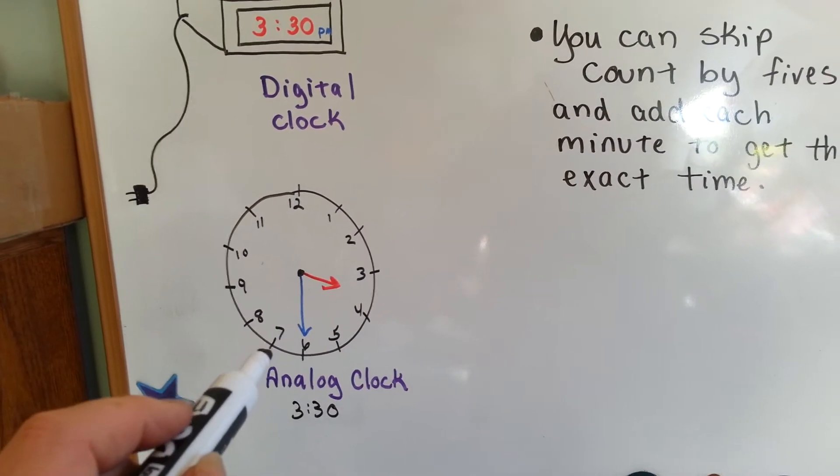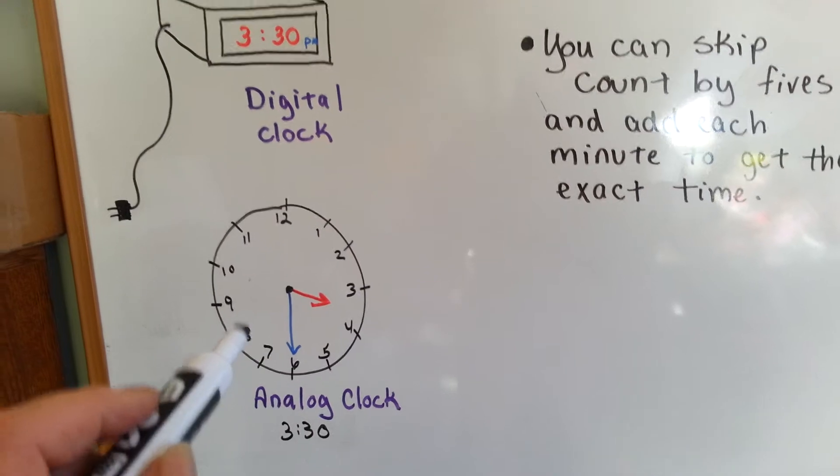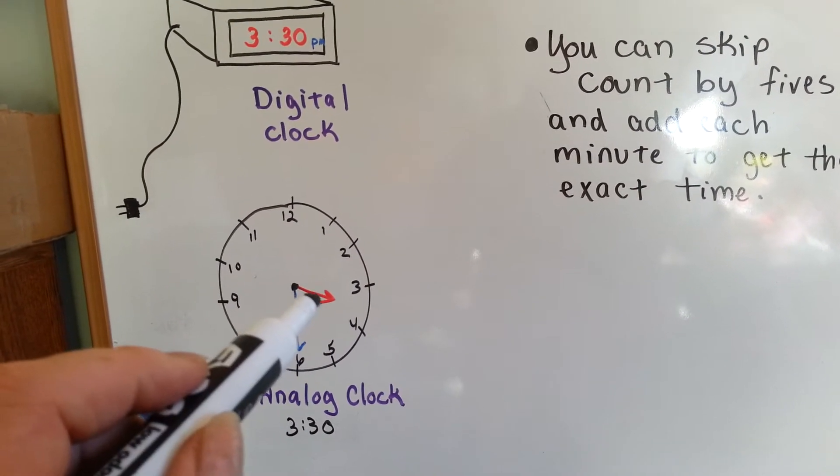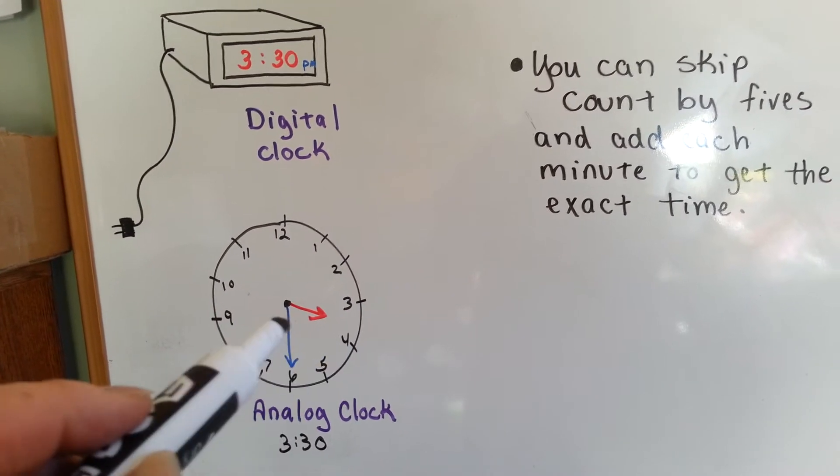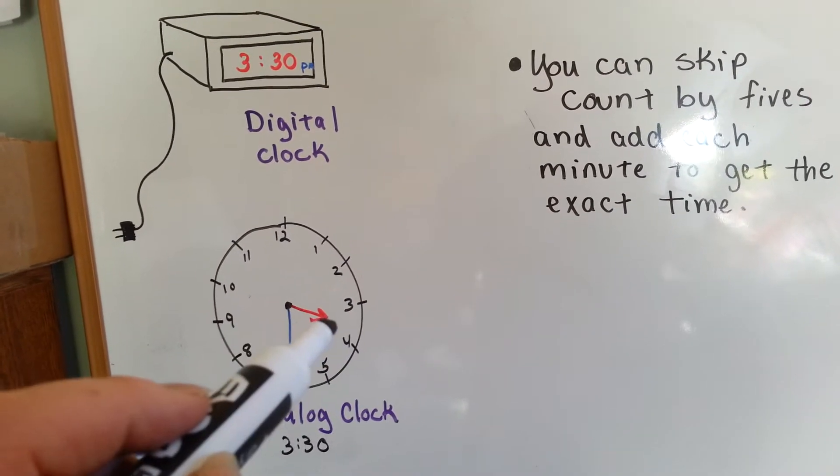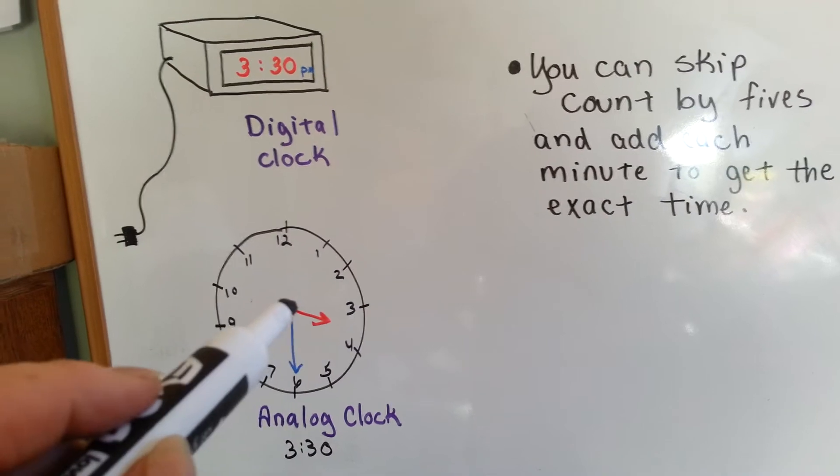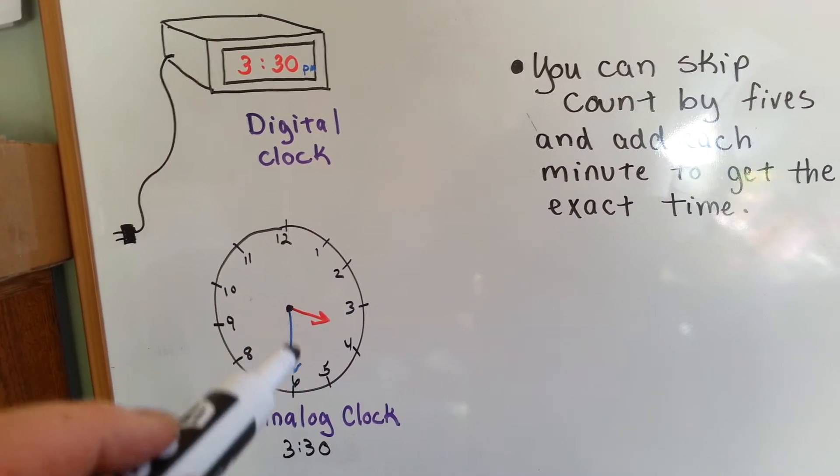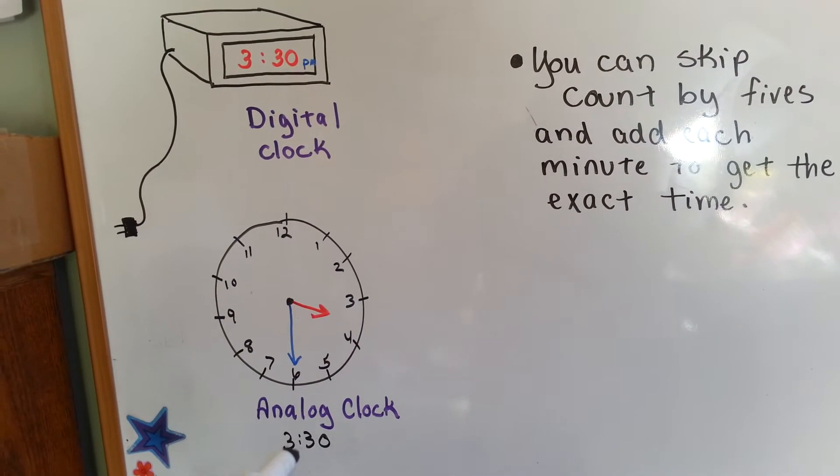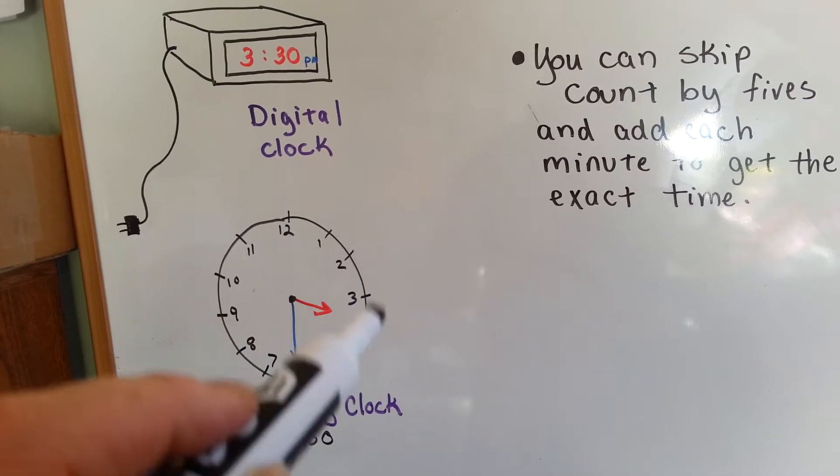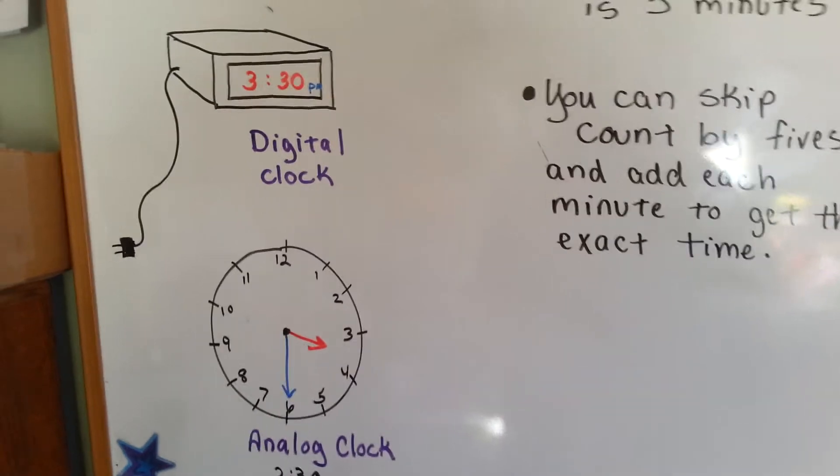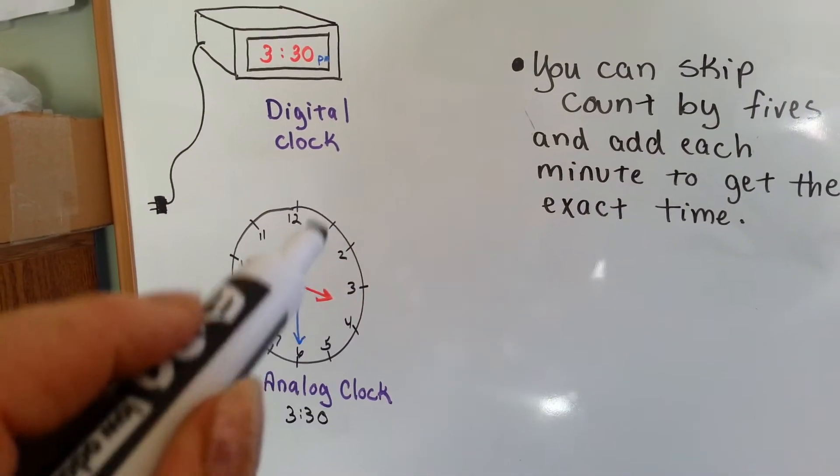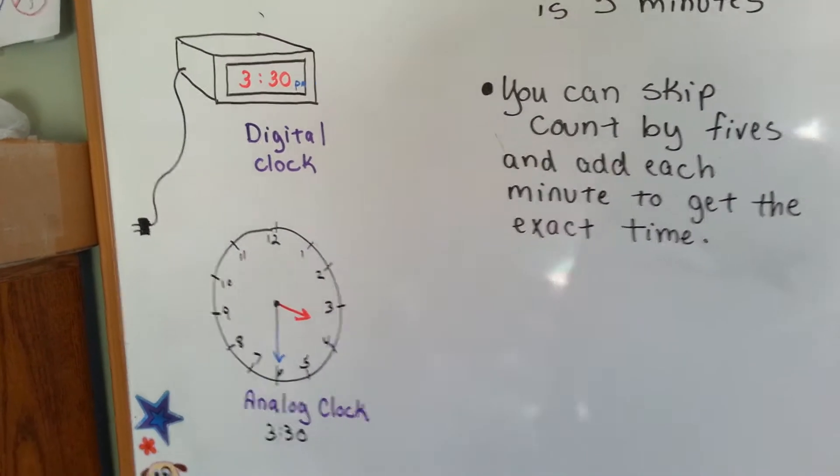This analog clock is the one that we've been learning. And this one also says it's 3:30 because the hour hand, the short hand, is in between the 3 and the 4. And if you remember from our previous video, we choose the smaller number, the 3. And then the minute hand is pointing to the 6. And by counting by 5s, the 6 is 30. So it's 3:30. So that's what we're going to talk about, all the minutes that are in between these numbers here.